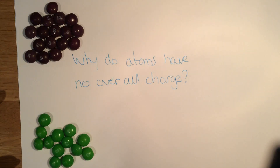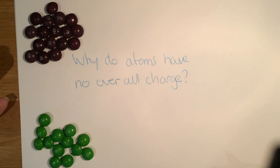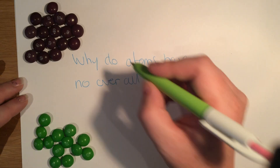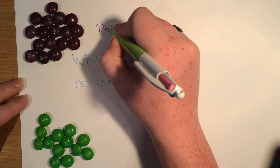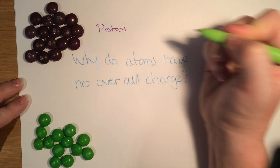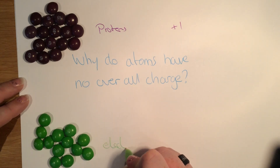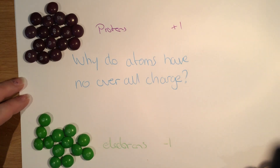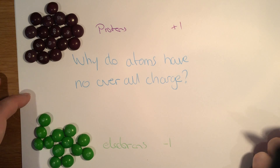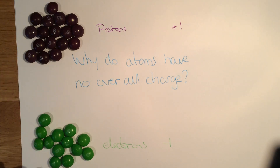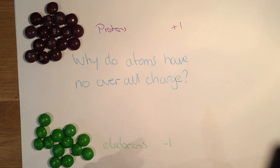Here we're going to be quickly looking at why atoms have no overall charge. So there are two things in an atom that have a charge: our protons up here, and they have a charge of plus one, and our electrons down here, and they have a charge of minus one. It's really important that you remember protons plus one, electrons minus one.